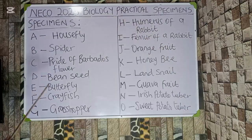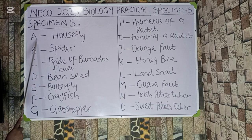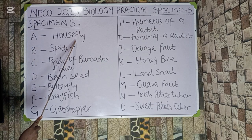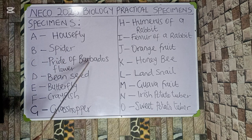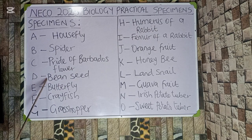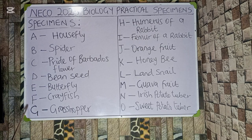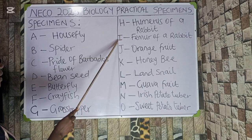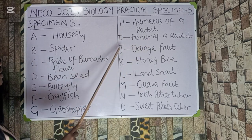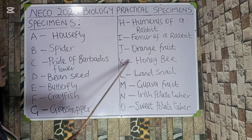The specimens are as follows: Specimen A — housefly; Specimen B — spider; Specimen C — Pride of Barbados flower; Specimen D — bean seed; Specimen E — butterfly; Specimen F — crayfish; Specimen G — grasshopper.